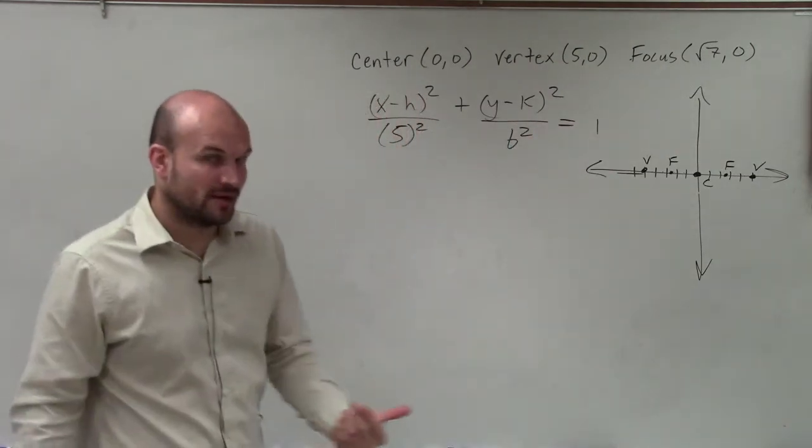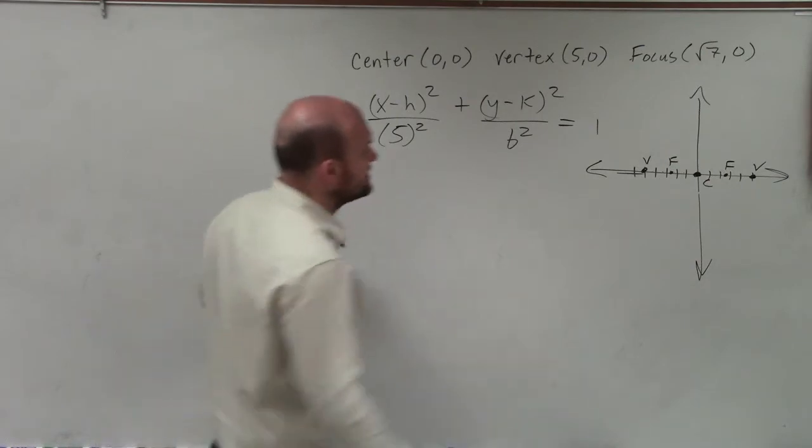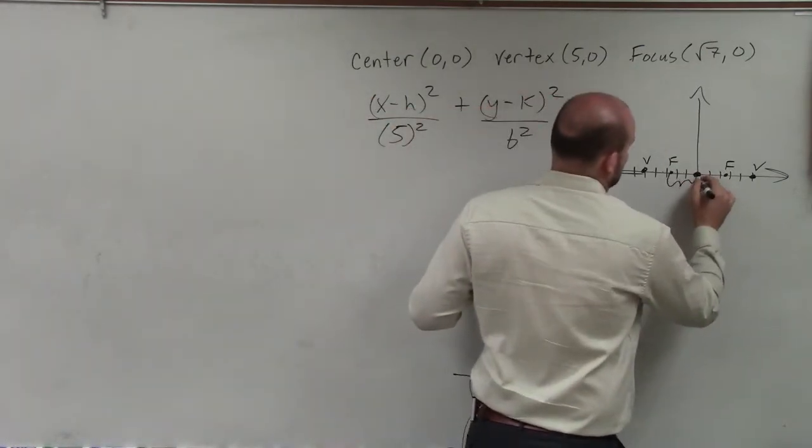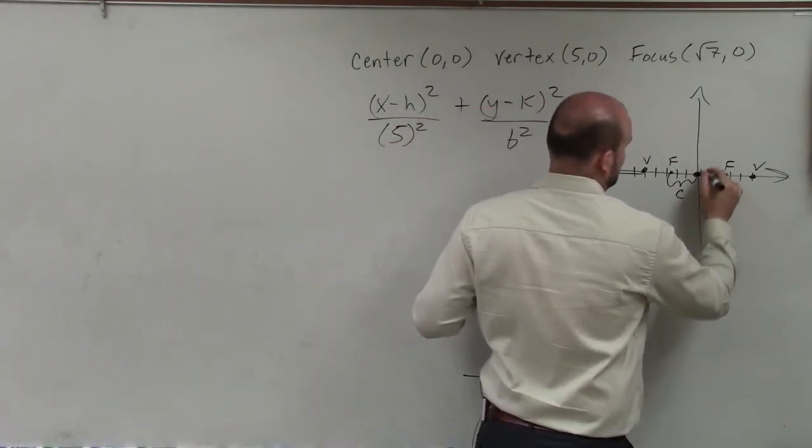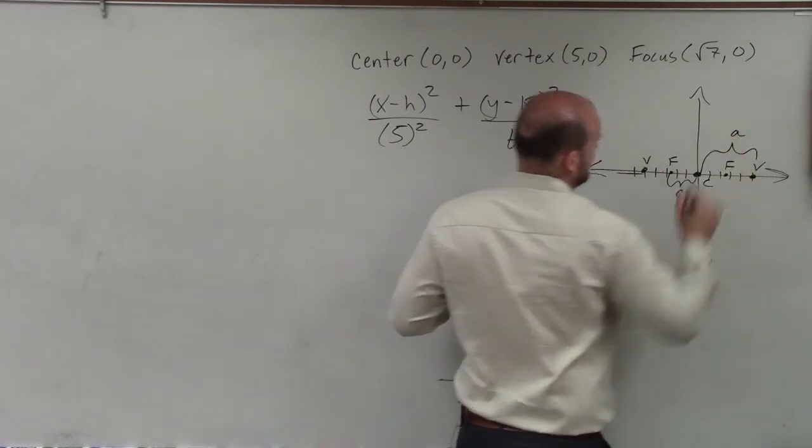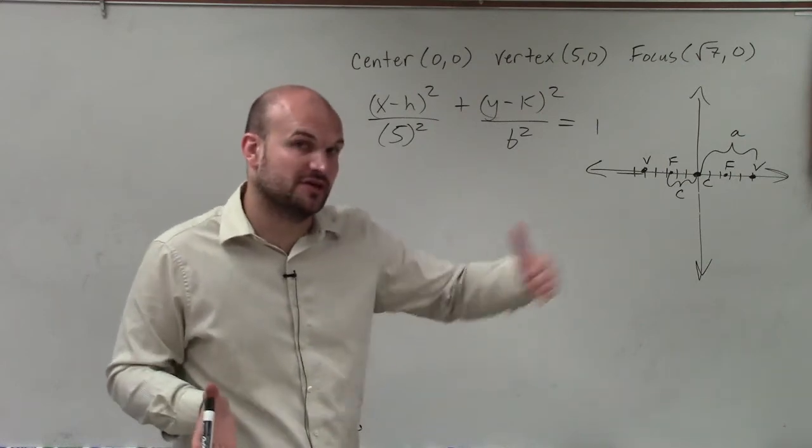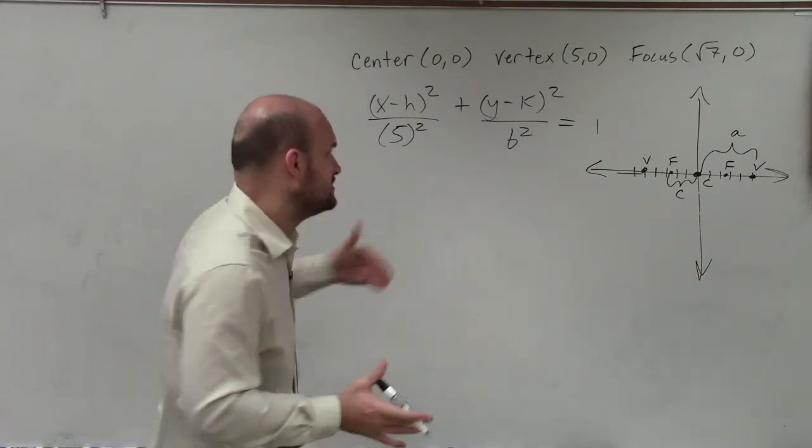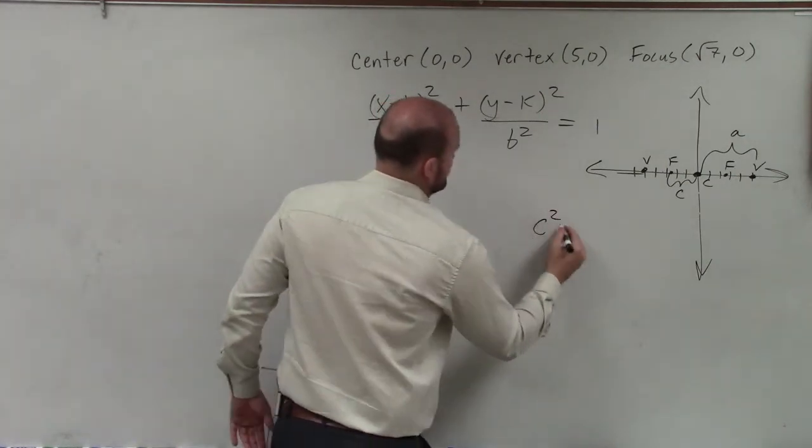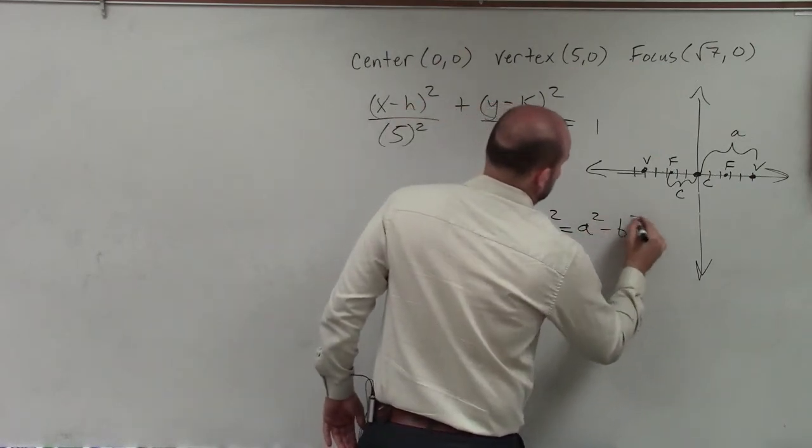Now the problem is, we don't know what b squared is. However, we do know the distance from the focus to the center, which is c. And there's a relationship between the distance between the center and the focus, the center of the co-vertex, and the center of the vertex. And that is that c squared equals a squared minus b squared.